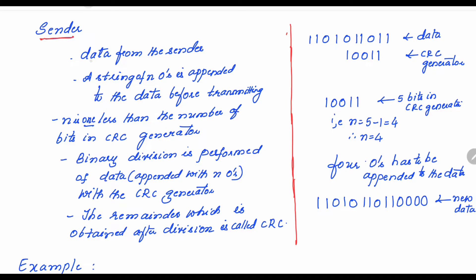The very first thing the sender will do is take the data it has to send. In this technique, the sender will append n zeros to the data. n is 1 less than the number of bits in the CRC generator. The CRC generator and the data value will be given in the question. Whatever the CRC generator is, you find how many bits it has — that number minus 1 gives you n, the number of zeros appended to the data before transmitting.